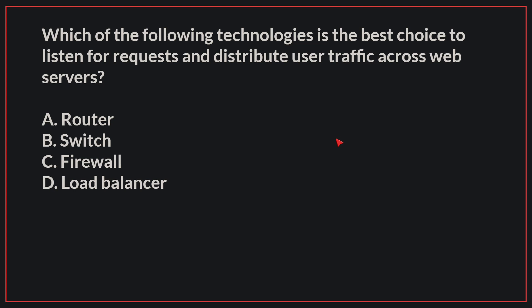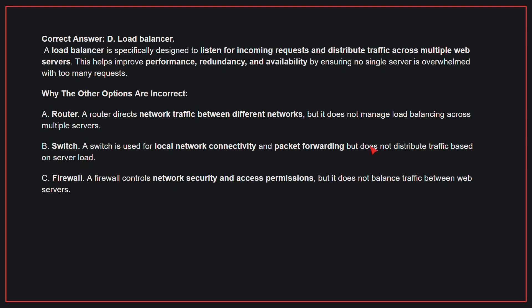Which of the following technologies is the best choice to listen for requests and distribute user traffic across web servers? The correct answer is D, Load Balancer. A load balancer is specifically designed to listen for incoming requests and distribute traffic across multiple web servers. This helps improve performance, redundancy, and availability by ensuring no single server is overwhelmed with too many requests.